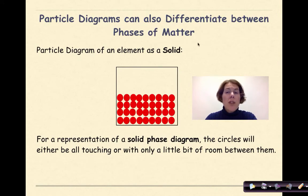Particle diagrams can also differentiate between phases of matter. Here we have the particle diagram of an element as a solid. For a representation of a solid phase diagram, the circles will either be all touching or only with a little bit of room in between them. So this right here would represent a solid. They might not be perfectly touching, but for the most part they are representing atoms that are next to each other that are closely packed together. We'd also say that this is a pure substance since all of the spheres represent the same type of atom because they're all the same type of color.